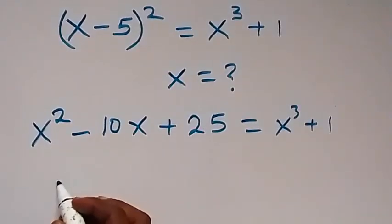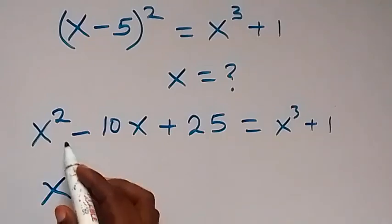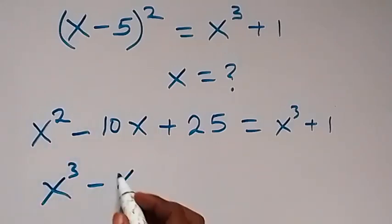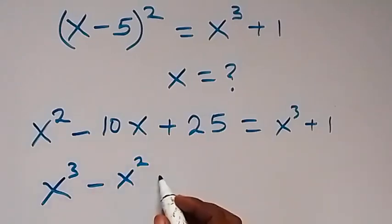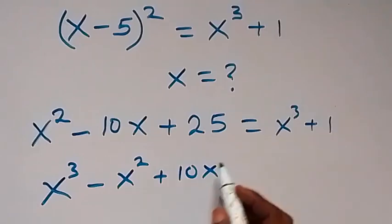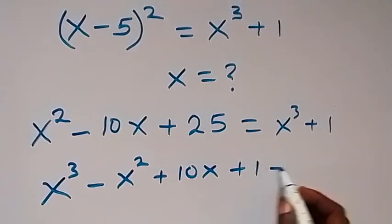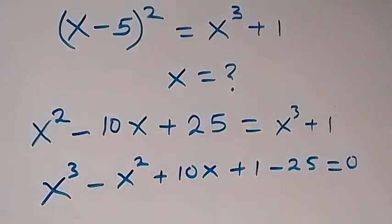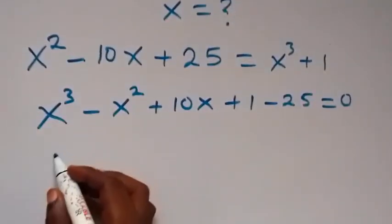From here we can take everything to one side. We rearrange — we take everything on this side to that side. So x squared becomes minus x squared, then minus 10x becomes plus 10x, then we have plus 1, then minus 25, which equals zero.